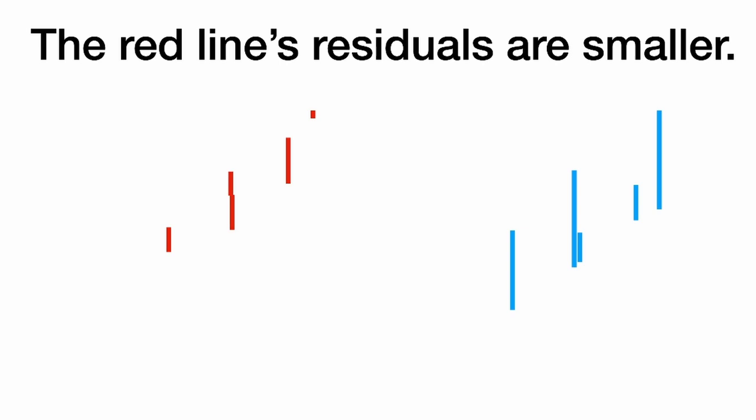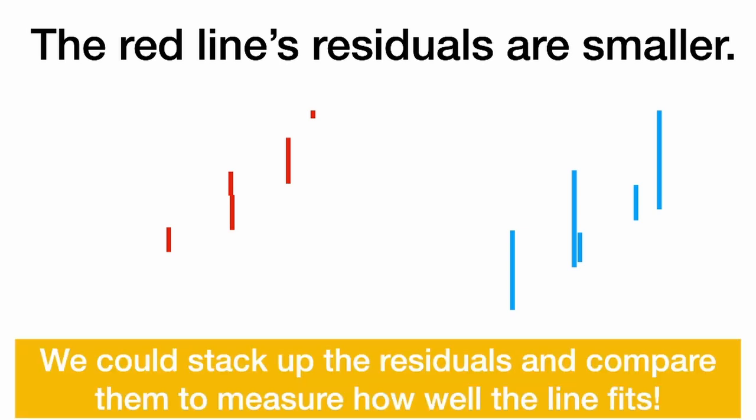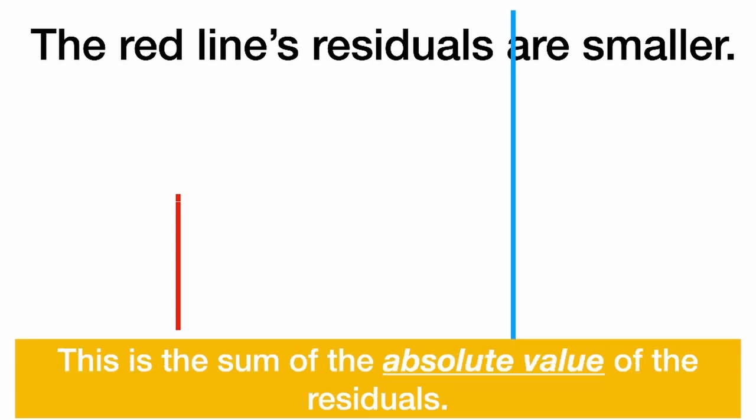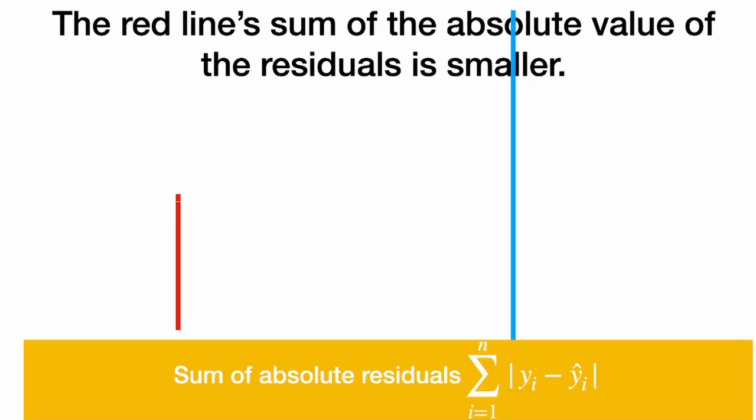So if we just look at the residuals, we could stack up the residuals and compare them to measure how well the line fits. And if we stack up the residuals, we see the red residuals are smaller. We added up the length of the residuals. This is the sum of the absolute value of the residuals, or just the size of the residuals. In mathematical notation, we could write that this is the sum of the absolute value of the residuals, which is y minus y-hat.